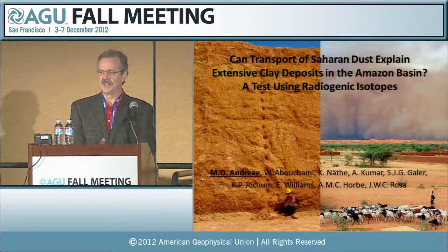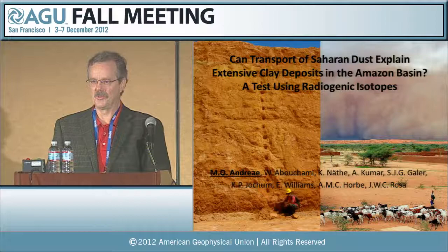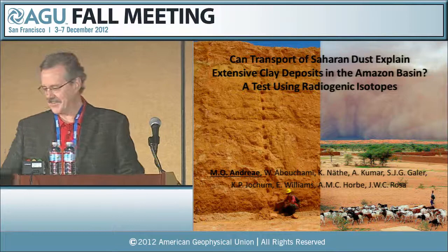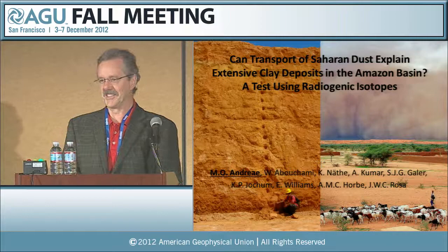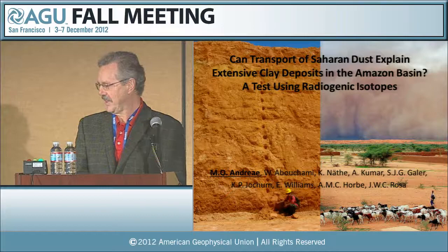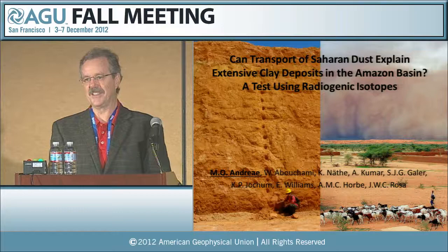I could do almost my whole talk today with my introduction slide. It shows you two very similar and very different things on two continents. The left side is an outcrop in the middle of the Amazon basin of a very extensive clay-dominated formation, the Belterra formation. You see a scientist at the bottom there taking samples. The other side is a continent away — it's a haboob, a dust storm in Sudan.